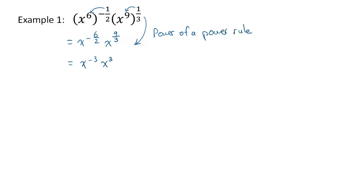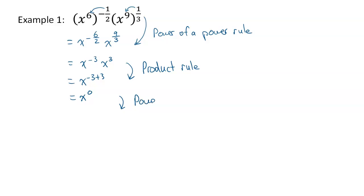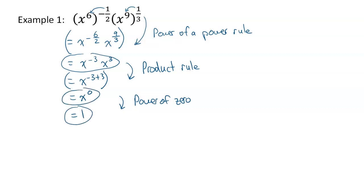Now we apply the product rule because they have the same base — we add the exponents together. That's negative 3 plus 3, which gives an exponent of 0. Now that the exponent becomes 0, this is a power of 0, and anything to the power of 0 is equal to 1. It would be expected that you show the step with X to the power of 0 and then your final answer. Three rules have all come into play in just that first example.